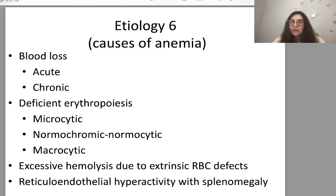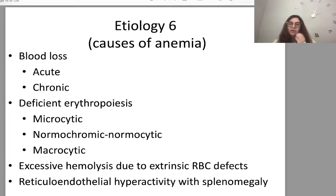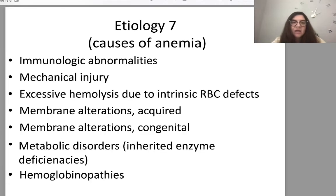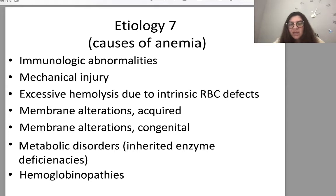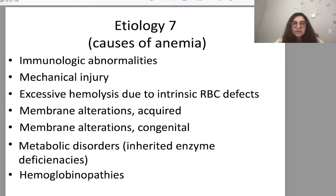According to classification, blood loss can be acute or chronic. Deficient erythropoiesis can be classified as microcytic, normochromic, normocytic, or macrocytic. Excessive hemolysis due to extrinsic red blood cell defects includes reticuloendothelial hyperactivity such as splenomegaly, immunologic abnormalities, and mechanical injury. Excessive hemolysis due to intrinsic defects includes membrane alterations — acquired or congenital — metabolic disorders like inherited enzyme deficiencies, and hemoglobinopathies.